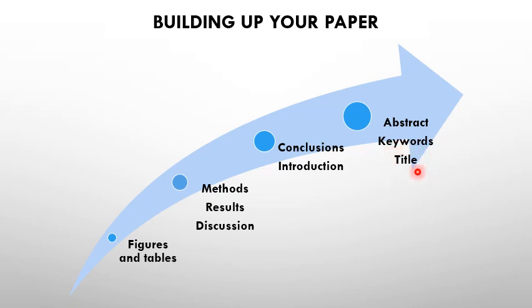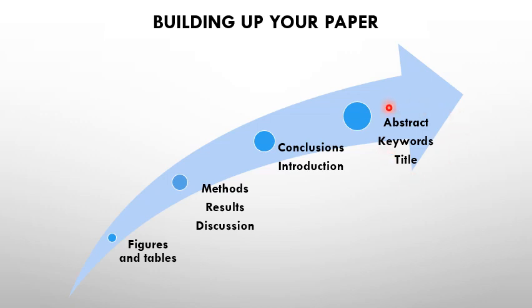The final step is writing the abstract, keywords, and title. The first step is preparing the figures and tables because this part of your work is the most important — you advertise your work here. This part has to be attractive for the targeted readers, so you need to be careful when writing these sections. The abstract has to be catchy and attractive for the readers.